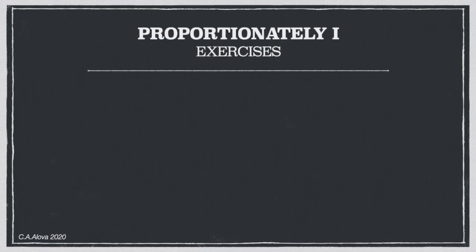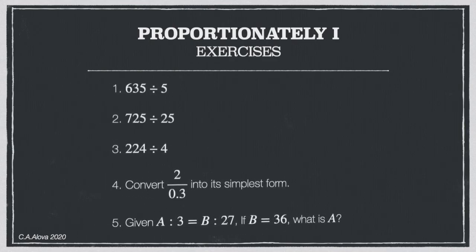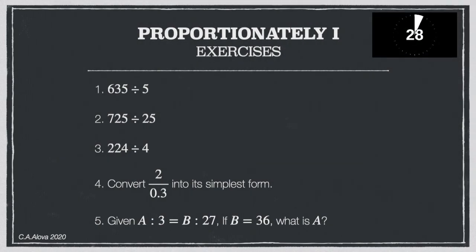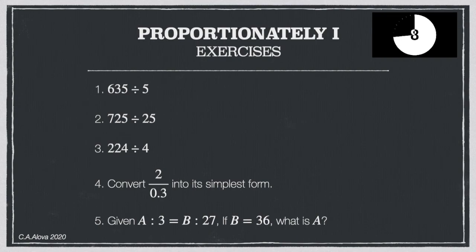That concludes the first part of our talk on Proportionately — direct proportion. Now it's your time, teachers, to practice. Answer the exercises using the proportionality sutra we learned, in 30 seconds. The first exercise: 635 divided by 5. Double 635 to get 1270, then move the decimal point to the left — the answer is 127.